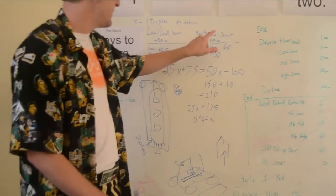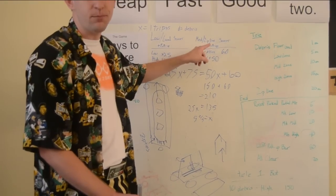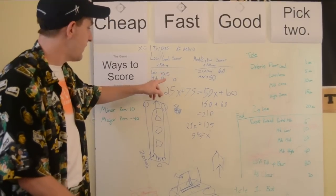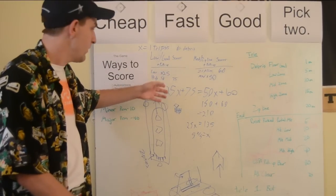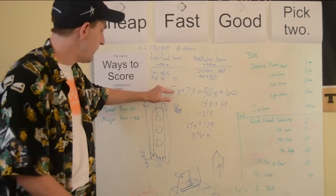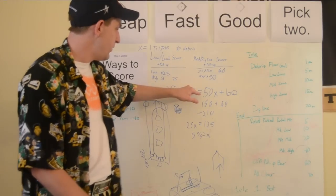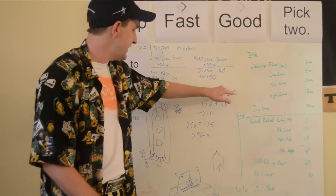The main difference between these two robots: this robot gets 60 points for the zip lines. This robot gets 75 points because on its last dump, it's going to dump 75 points into the high goal. So that brings us to the equation: 25x plus 75 equals 50x plus 60.